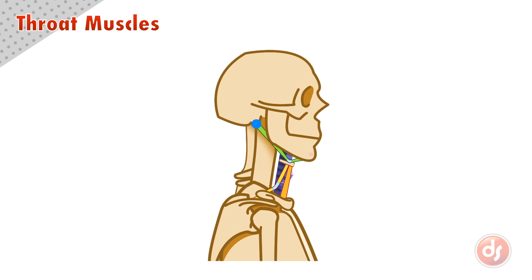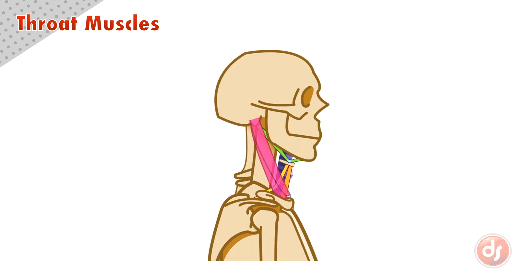Because the digastric also anchors into the front of the jaw, if the front section contracts, it will help pull the mandible or jaw bone down. The sternohyoid will also work in conjunction with the sternocleidomastoid. Since they anchor to the front of the ribcage and act on the neck and the head, if they contract, they will flex the neck, pulling the head forward.